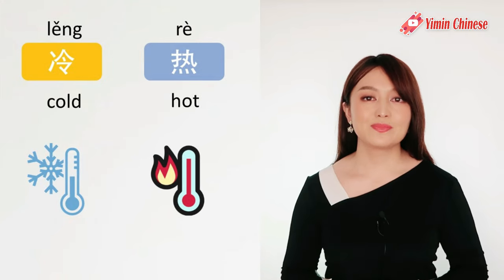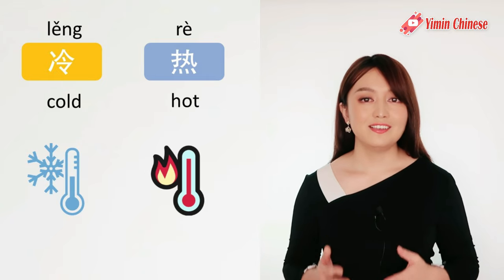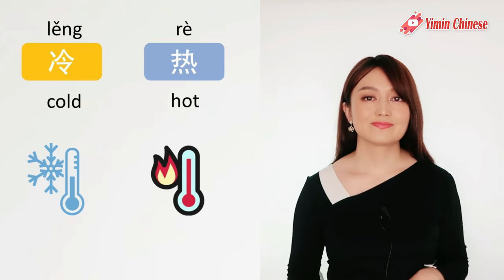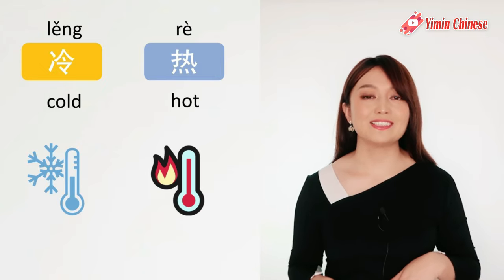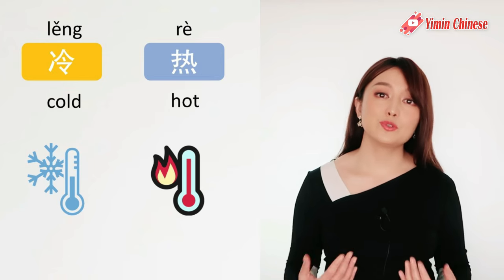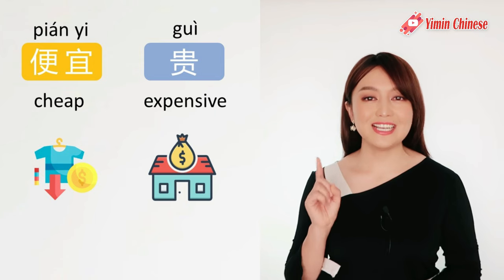下一组, next pair: 冷和热, cold and hot. 冷, cold, is a low tone: 冷. And 热, hot, is a falling tone: 热. 比如说, 这是冷水还是热水? Is this cold water or hot water? 这是冷水还是热水?